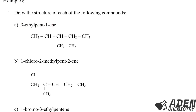Okay, we proceed to question 1B. We are told to draw the structure of 1-chloro-2-methyl pent-2-ene. So the parent name has five carbons — one, two, three, four, five.